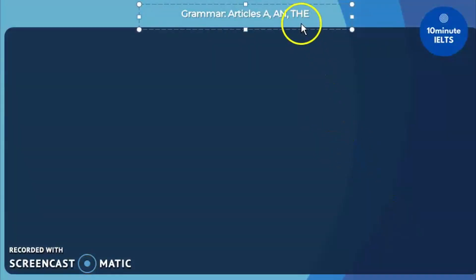Welcome to 10-Minute IELTS. Today we'll be learning about grammar, specifically articles a, an, and the. Now remember, these are the only three articles in the English language and they are used to indicate one piece of the noun.